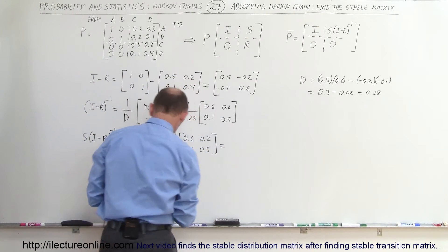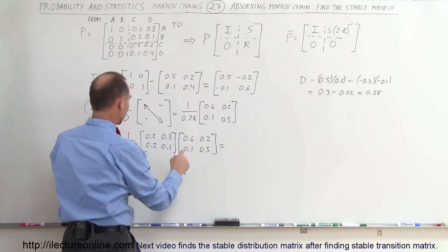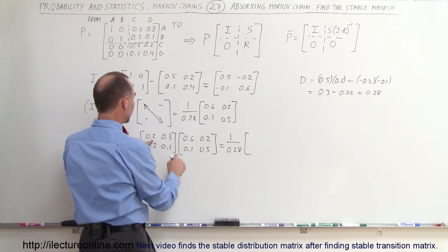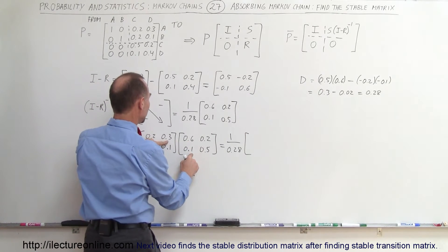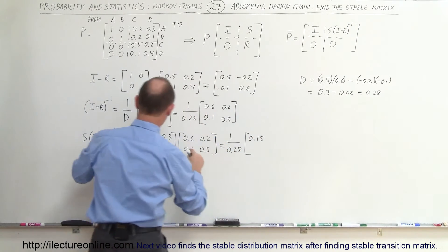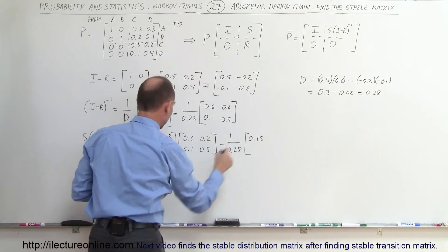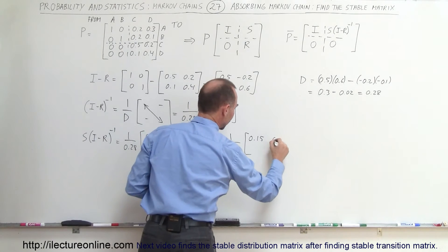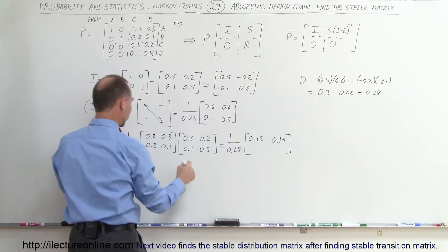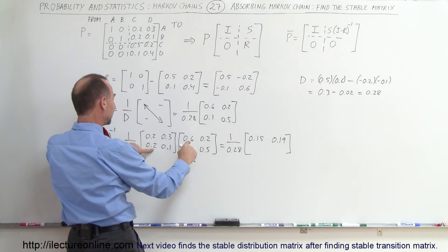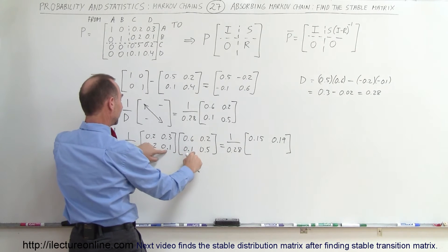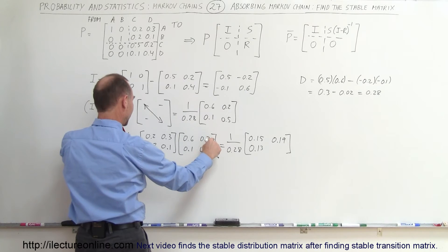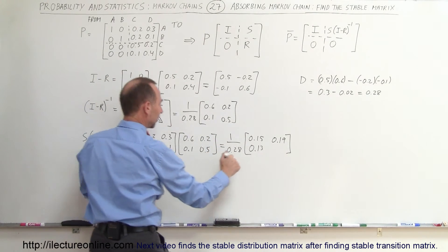Now we need a calculator. So 0.2 times 0.6 is 0.12, plus 0.3 times 0.5 is 0.15, giving 0.15 for that entry. Next, 0.2 times 0.2 is 0.04, plus 0.3 times 0.5 is 0.15, giving 0.19. Then 0.2 times 0.6 is 0.12, plus 0.1 times 0.1 is 0.01, giving 0.13. Finally, 0.2 times 0.2 is 0.04, plus 0.1 times 0.5 is 0.05, giving 0.09.